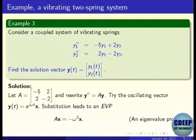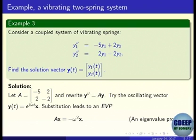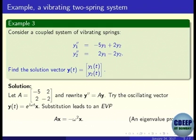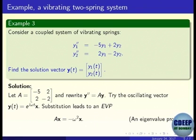Another example: a coupled vibrating spring system. There are two springs attached in series with spring constants 5 and 2. We want to study the vibrations of this coupled system. For a single spring we know it is simple harmonic, but for a coupled system it becomes complicated. We take the coefficient matrix with entries -5, 2, 2, and minus something, and rewrite the equation as y'' = Ay, where y is the vector (y₁, y₂).